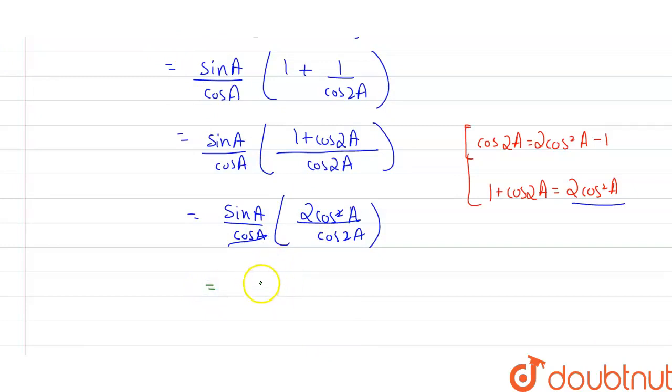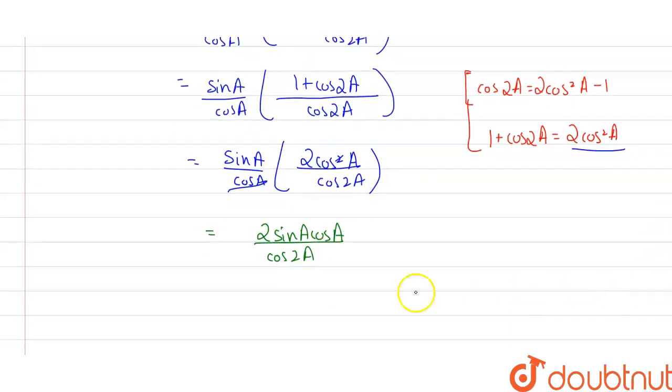So I'm going to write this as 2 sin A cos A in the numerator part, divided by cos of 2A. Now we know that 2 sin A cos A, since 2 sin theta cos theta always equals sin 2 theta.